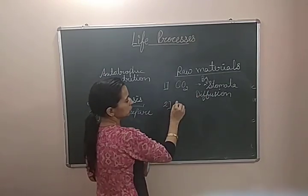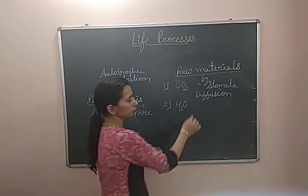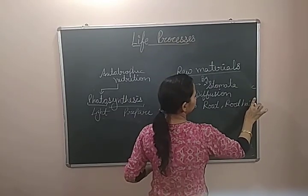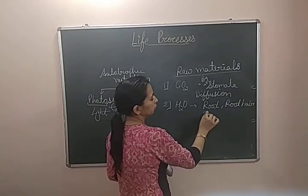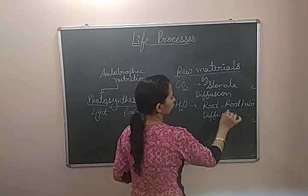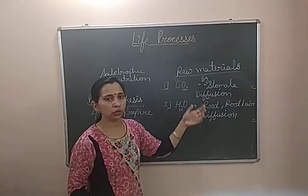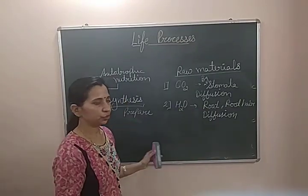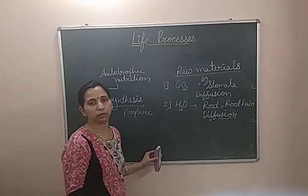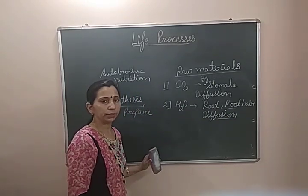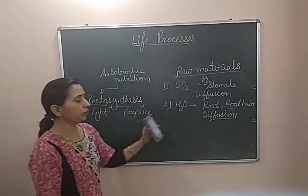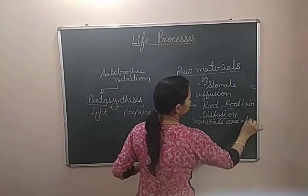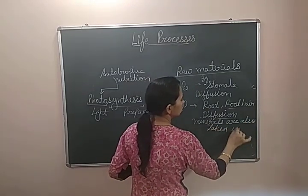The second raw material required for photosynthesis is water. Water is taken in by the roots and root hairs. Root hairs are the structures which help in the absorption of water, also by the process of diffusion. Diffusion is the process by which any substance moves from high concentration to low concentration. Water, which is present in high concentration in the soil outside the roots, gets diffused inside the roots. With the water, some very important minerals are also taken in, in dissolved form.